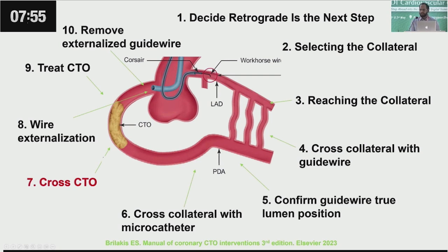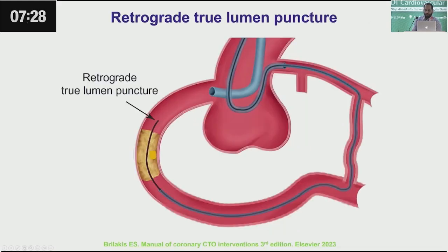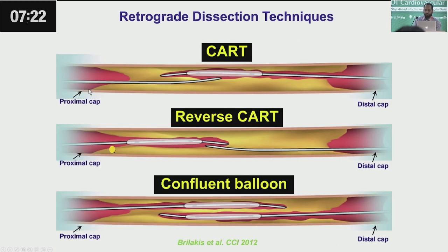Once you've reached the distal vessel, you need to cross the CTO retrogradely. You could get your microcatheter up there and try to enter from the catheter itself. A successful case, if you're lucky, is to go from true to true, as Dr. Kaiser was referring to. But that's sometimes not possible. Or you could keep the wire there and try to get back your anterograde, because now you have a marker so you know where to go. Or the other way is what we call a reverse CART, where you've done an anterograde preparation and leave a balloon in whatever channel it is — often a subintimal channel.